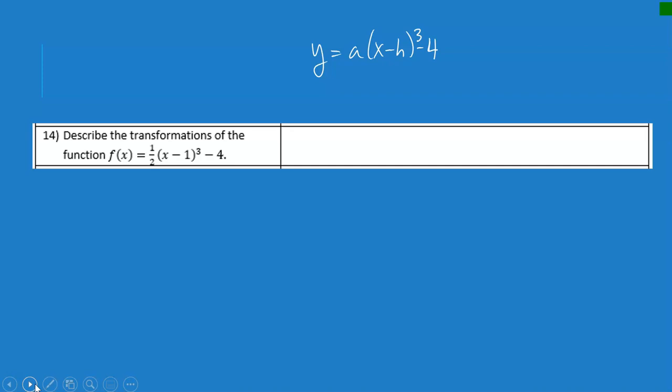But all the things do the same thing. So I have an a value of 1/2. 1/2 is less than 1, so this tells me that I have a vertical shrink of 1/2.